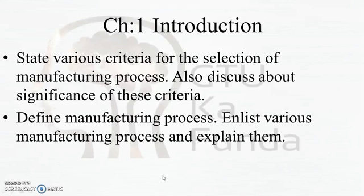In the introduction chapter there are two questions: state various criteria for the selection of the manufacturing process, and discuss the significance of these criteria. This time I have not marked any question as most important because you have enough time for preparation — if you go through one chapter per day, you can complete the whole syllabus in a week. I will not provide a most-important list, so go through the whole question bank. The two questions for chapter one are: define manufacturing process, list and explain various manufacturing processes.